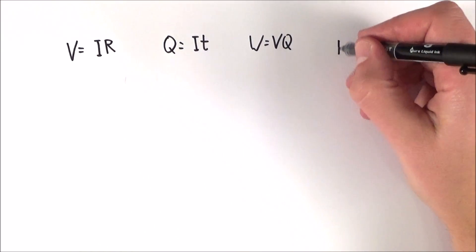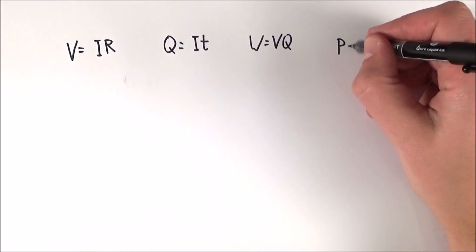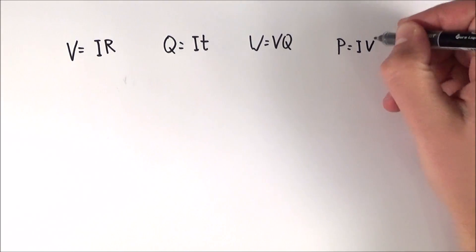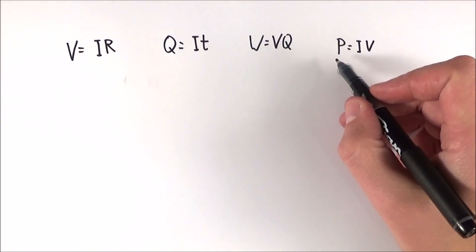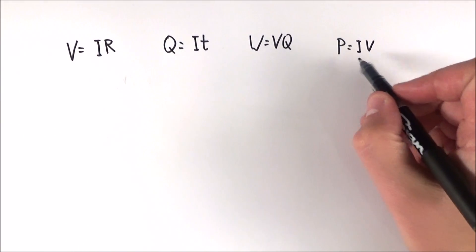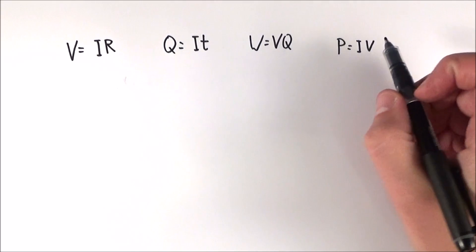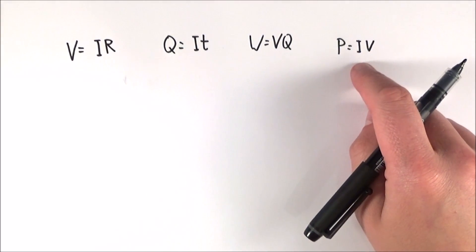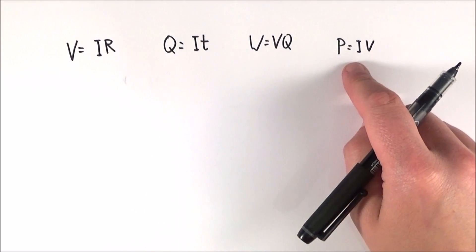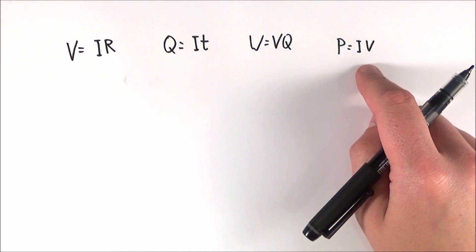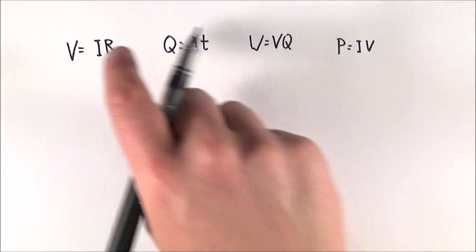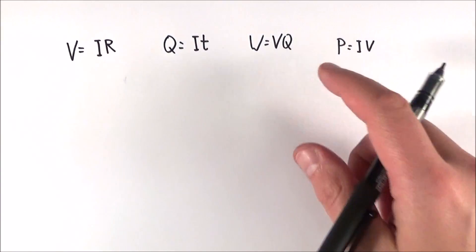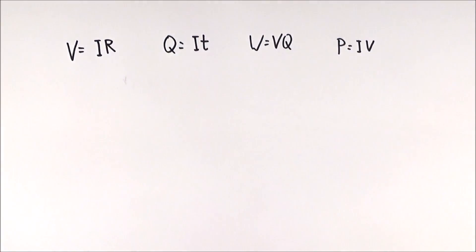We can also look at power in electrical circuits: P is equal to I multiplied by V. There are also derived equations where P equals I squared R, or V squared over R, and these all come from combining the power equation with V equals IR.